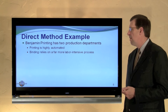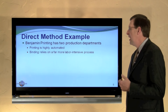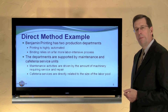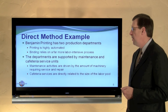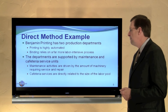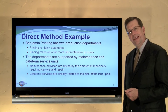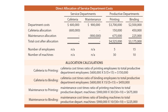Benjamin Printing has two production departments: the printing department, which is highly automated, and the binding department, which relies on a more manual labor-intensive process. The departments are supported by a maintenance department and a cafeteria department. Maintenance activities are driven by the amount of machinery requiring support and cafeteria services are directly related to the number of employees. Here is a spreadsheet where across the top row is simply the cost of each operation. The cafeteria costs $600,000 to operate, maintenance costs $900,000 to operate, and the production costs related to printing and binding were $3,700,000 and $2,500,000 respectively.